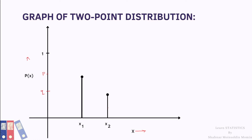This is the graph of two-point distribution. In this graph we see only two points X1 and X2, as there are only two points in the two-point distribution, and the total probability is distributed on only these two points X1 and X2 such that their sum of probabilities equals 1.